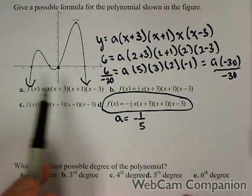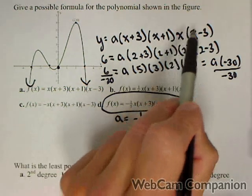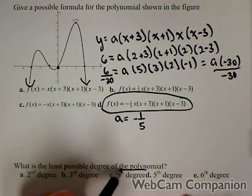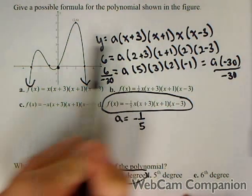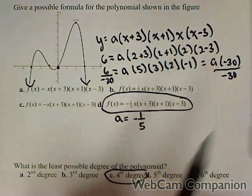So the least possible degree of this polynomial, it at least has to be a four degree polynomial. We can tell that it has to be even, we can tell by the number of turning points, or we can tell by the number of factors.